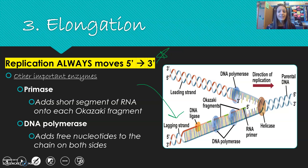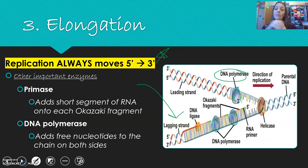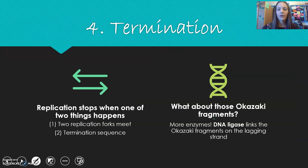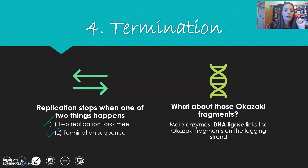DNA polymerase works on both the leading and the lagging strand — those are the little blue guys on the diagram — and they add those nucleotides: a sugar, a phosphate, and a base, essentially building the other half of the strand of DNA. Termination occurs when one of two things happens: two replication forks meet and there's nowhere else to go, or you get a termination sequence — essentially like a stop codon — and replication stops.